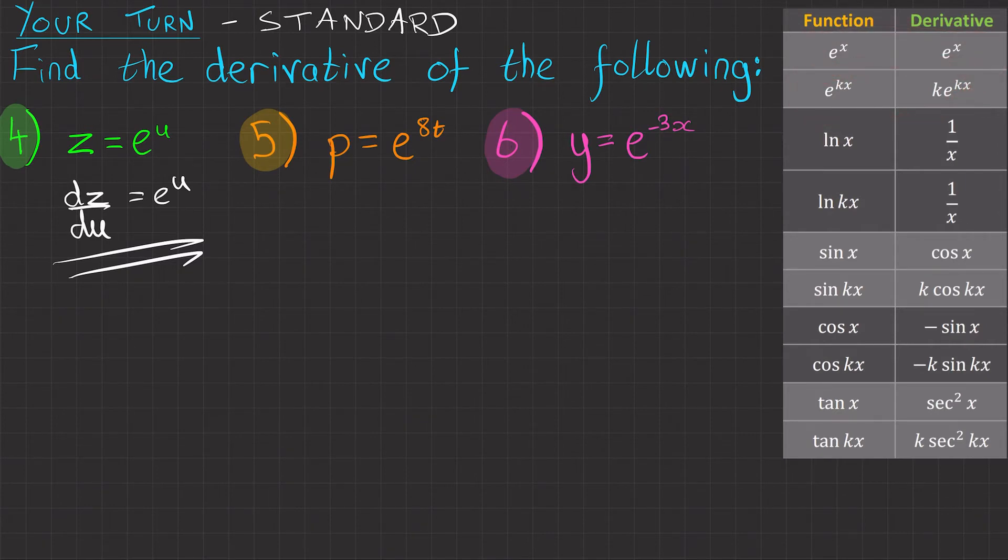So e to the kx becomes ke to the kx. So dp/dt equals 8e to the 8t. That's that one done.